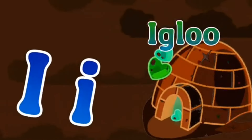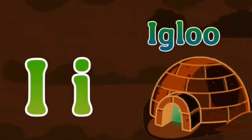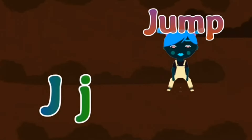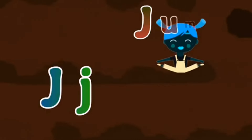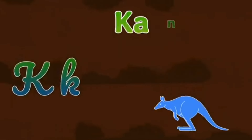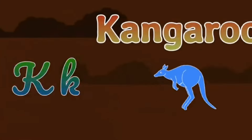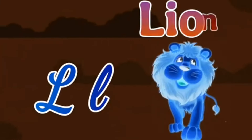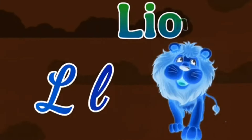I is for Igloo, I-I-Igloo. J is for Jump, J-J-Jump. K is for Kangaroo, K-K-Kangaroo. L is for Lion, L-L-Lion.